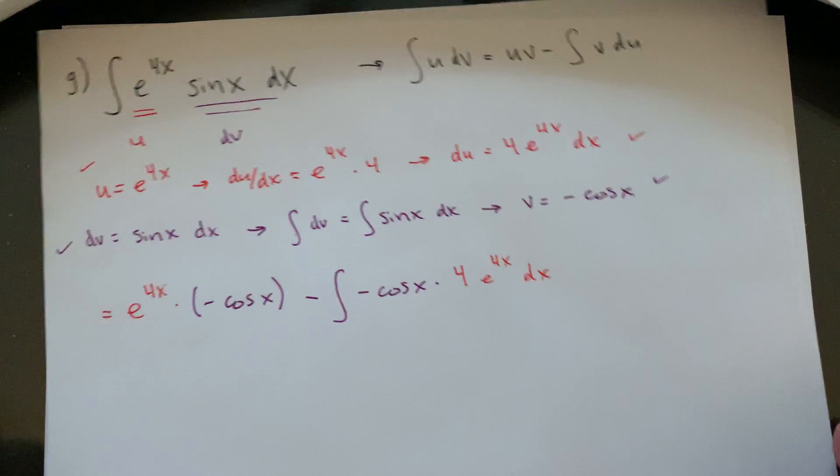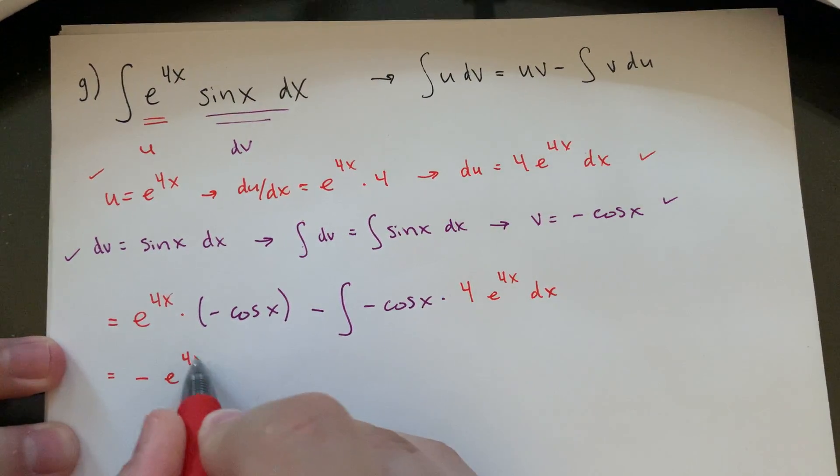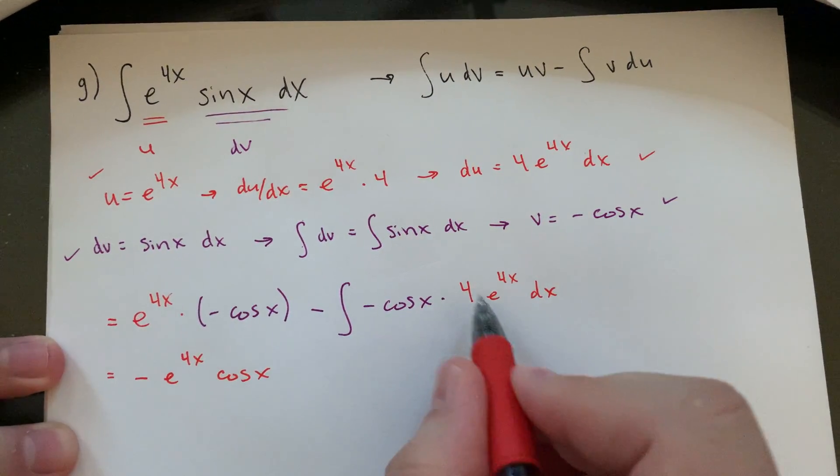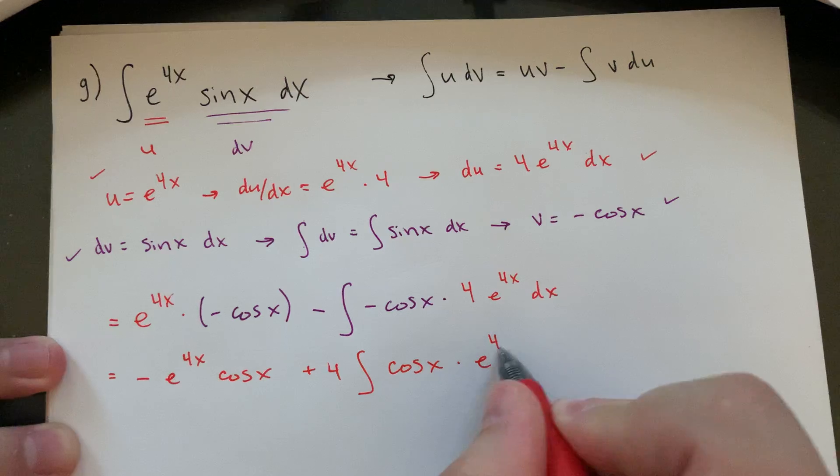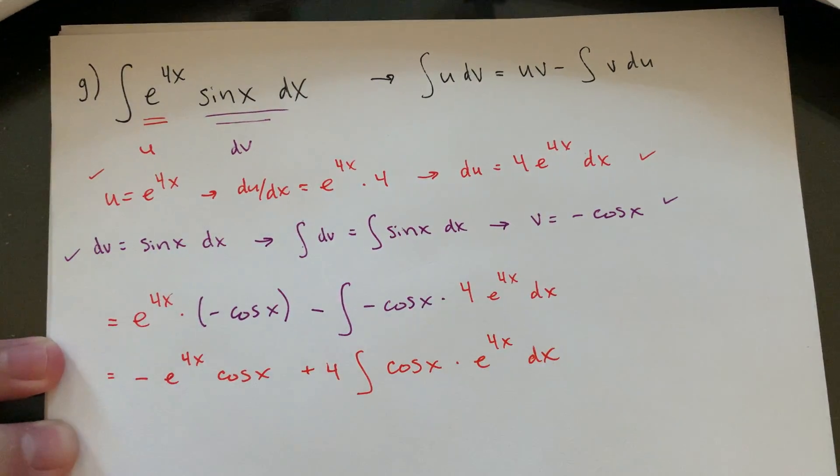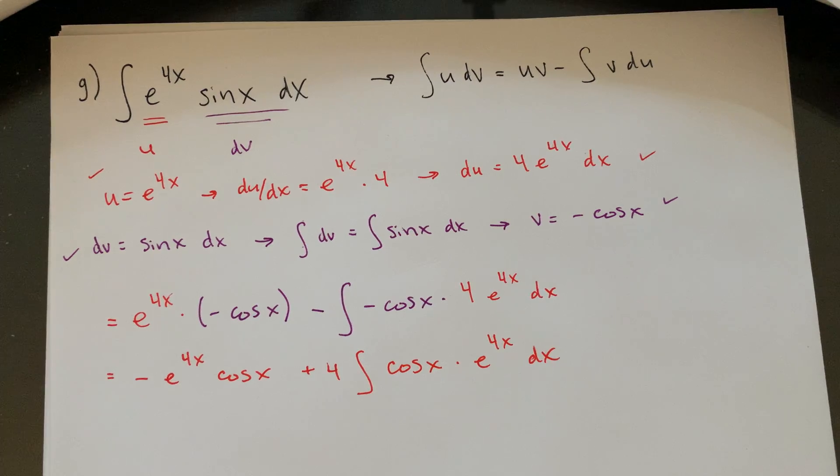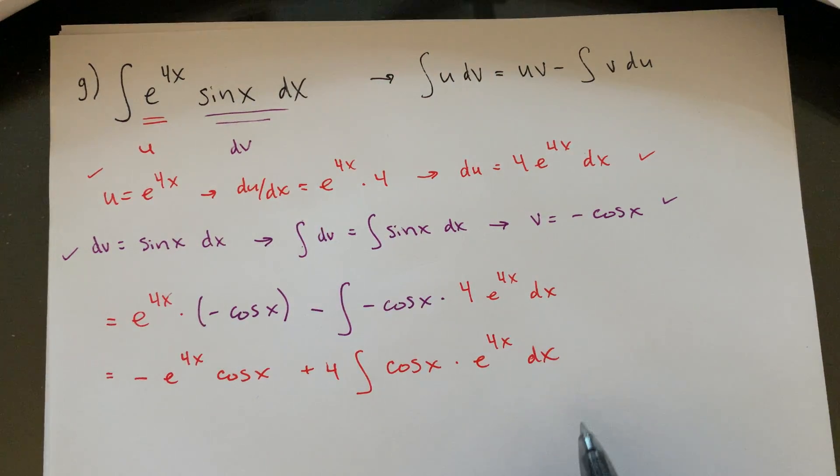Okay, so then cleaned up just a little bit, this is like negative e to the 4x cosine x, negative negative is plus. I'll bring the 4 out in front, integral cosine x e to the 4x dx. So this is definitely a two-rounder one, right? We're not able to really do this any better than we were able to do the original. And let's keep that same kind of format going.